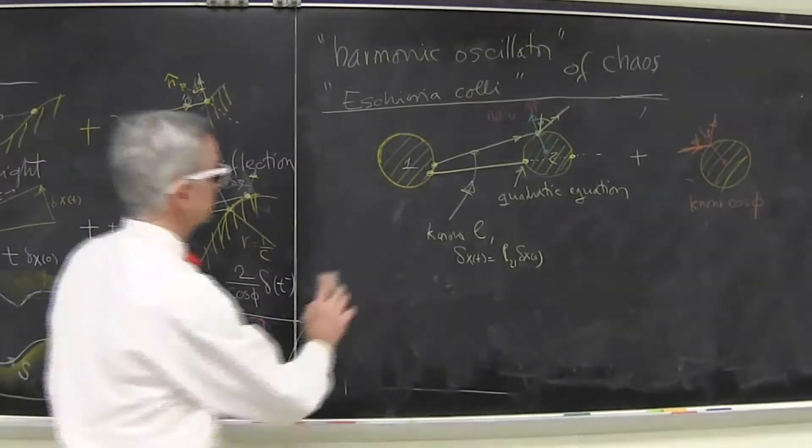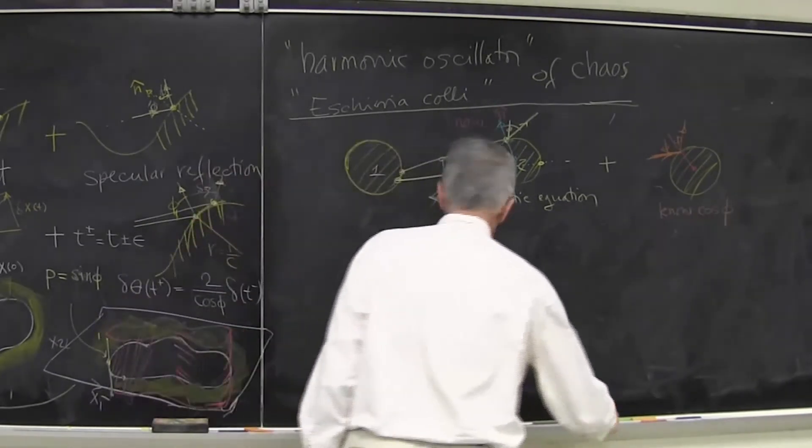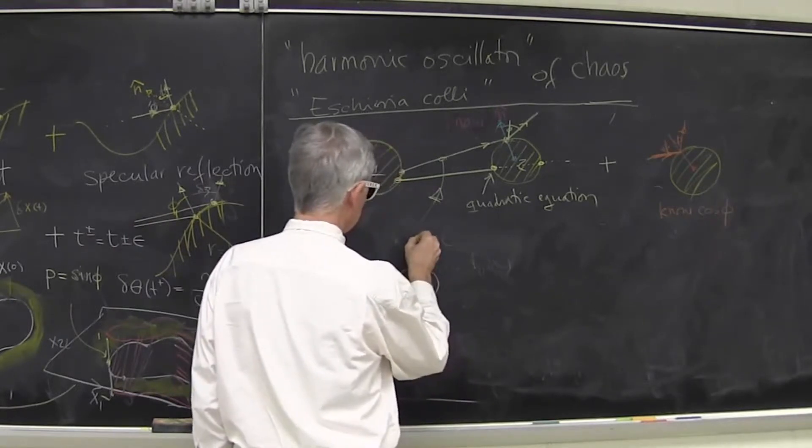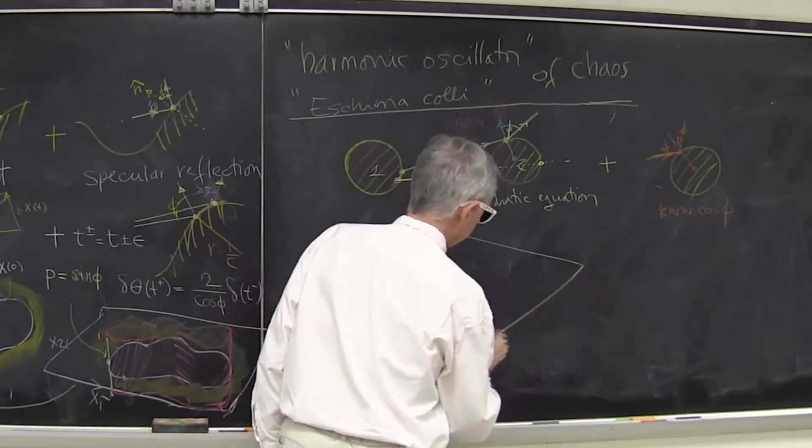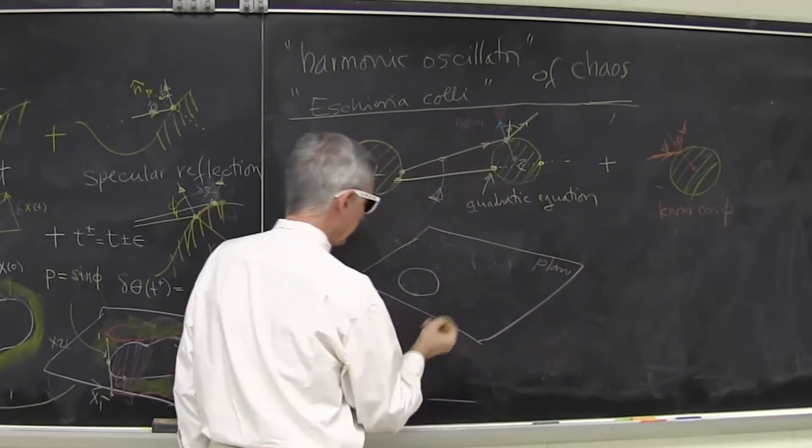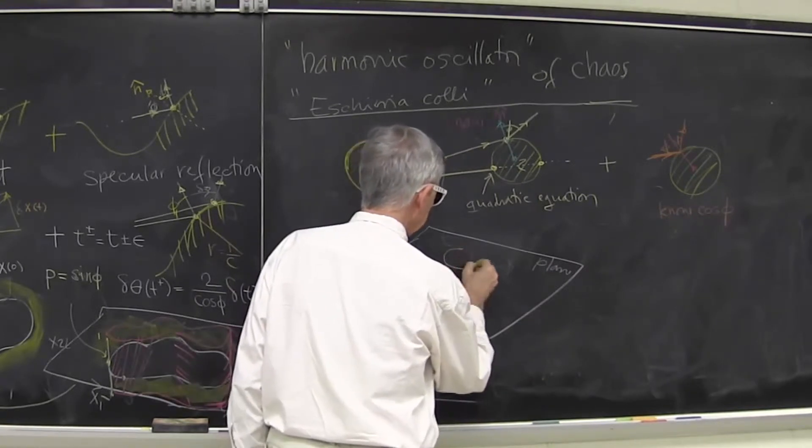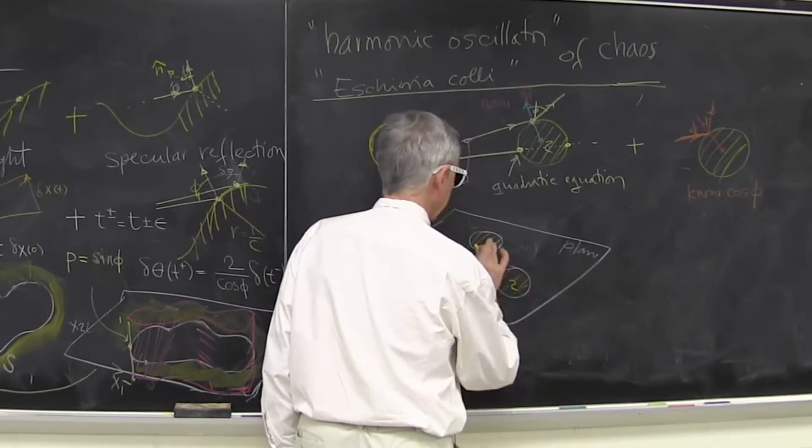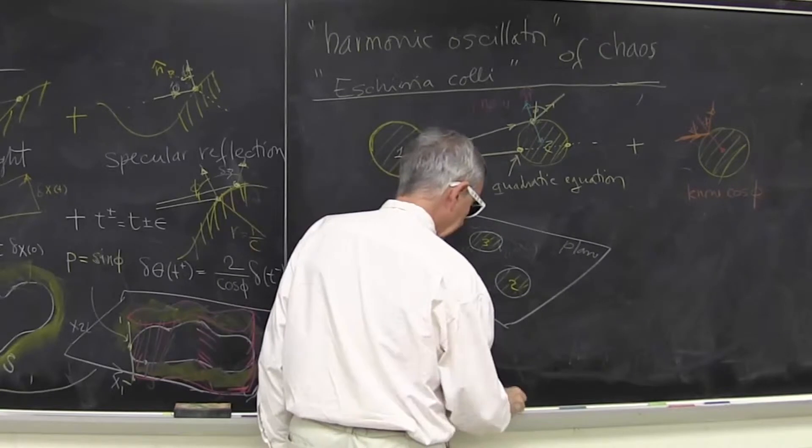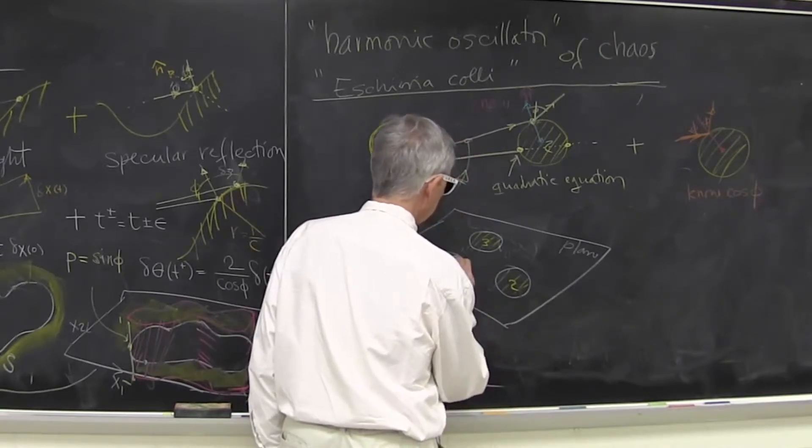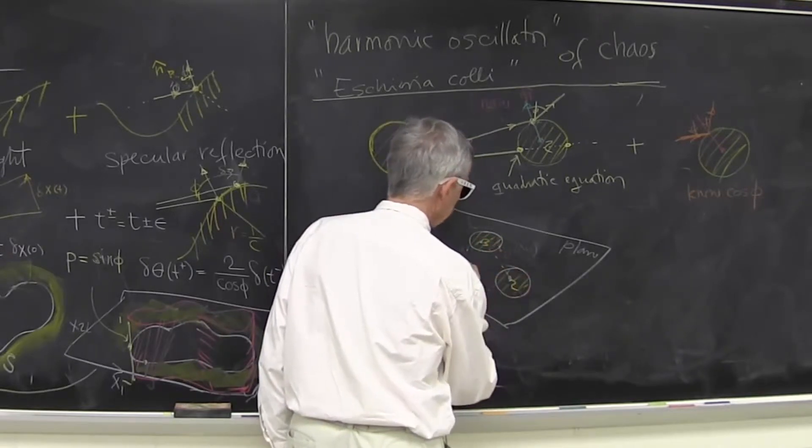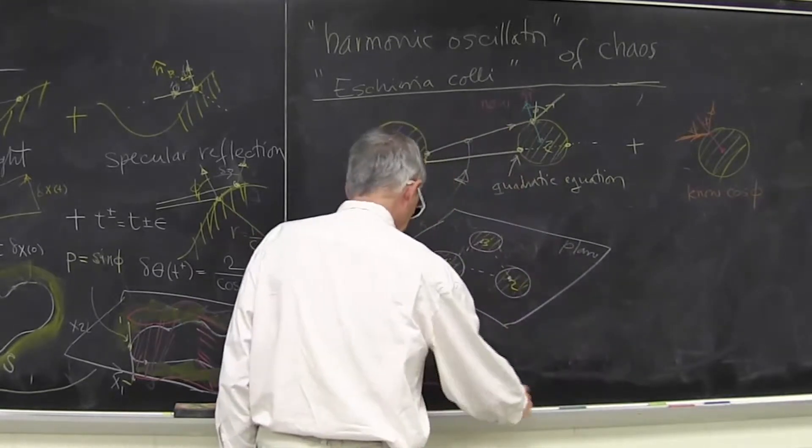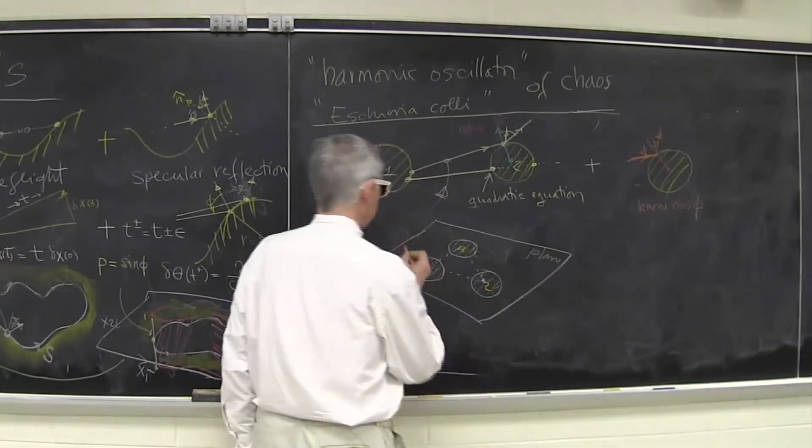So now what about Poincaré sections? They're very easy, because what one does in this three-disk problem is one takes three circles in a plane, which I'll again draw in some kind of perspective. So this is a plane, a table, and there are three disks of equal radius. And each one of them has its own Poincaré section, which is very simple. It's just a cylinder.